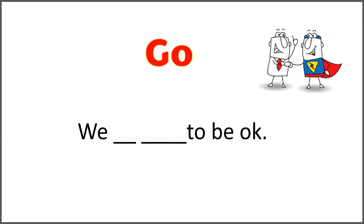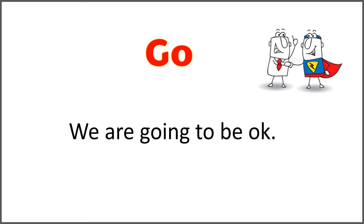The given word is 'go,' and the sentence is 'we blank blank blank to be okay.' Use the correct form of 'go' with 'are' to complete this sentence. We are going to be okay.